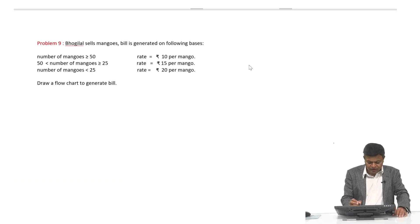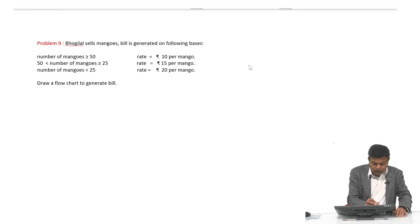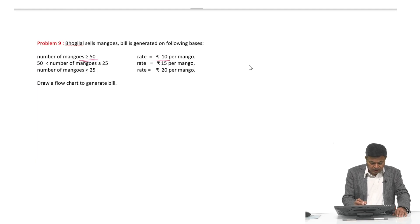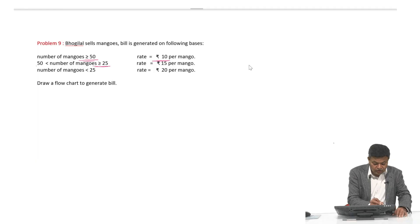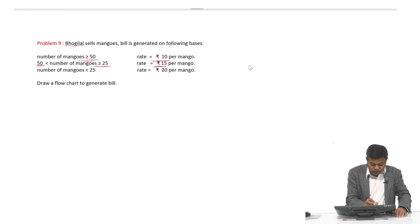Today we are discussing some more flowcharts on decision walks. The first one is on Bhogilal. Bhogilal sells mangoes and the bill is generated on the following basis: if the number of mangoes is greater than or equal to 50, the rate is rupees 10 per mango; otherwise if greater than or equal to 25 but less than 50, the rate is rupees 15; otherwise if less than 25, the rate is rupees 20.